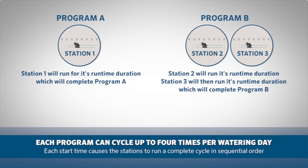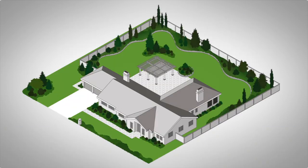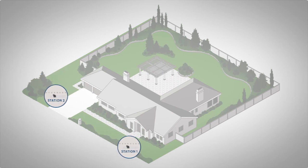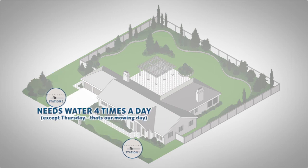You can set multiple start times for each program, which will cause the program to run more than once. You can have a program cycle up to four times per watering day. Remember that each start time causes all the stations within the program to run a complete cycle in sequential order. So let's say that you have two newly seeded zones — stations one and two, for example.